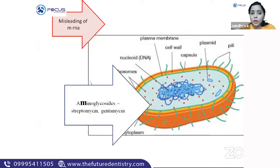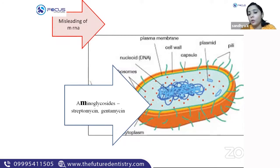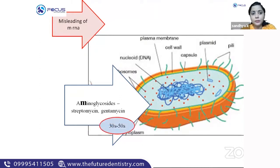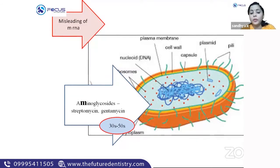The next group: antibiotics which cause misreading of mRNA — that is aminoglycosides. All aminoglycosides come under this group. Importantly, aminoglycosides act on both the 30S and 50S ribosome, whereas tetracycline acts only on 30S and chloramphenicol acts only on 50S.